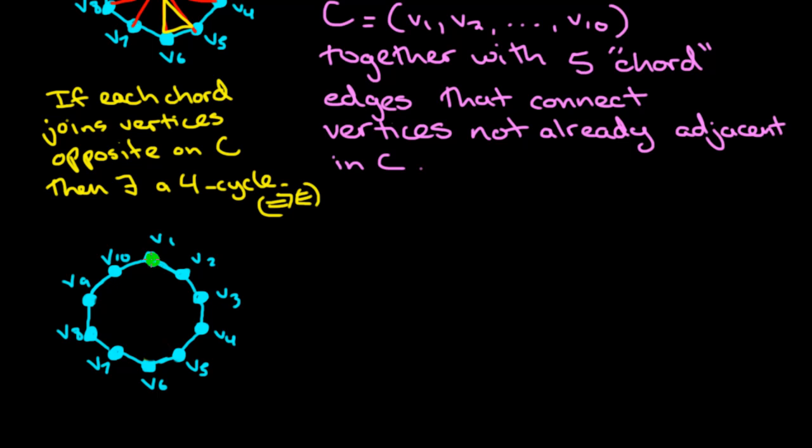Now, if it was to be incident with vertex V3, we would have just created a three cycle. And that's not the case. So that cannot be. If it was incident with V4, then we would have created a four cycle. And that is also a contradiction.